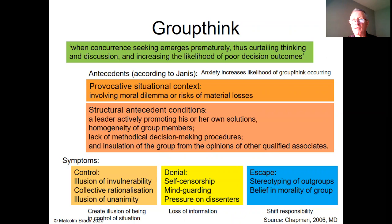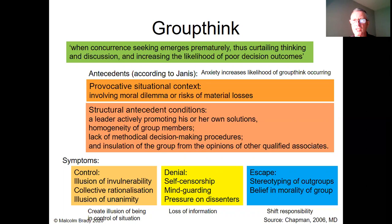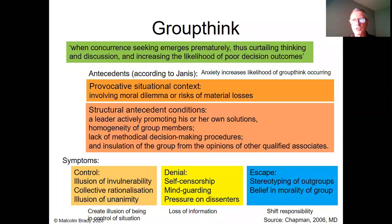Insulation from the opinions of other qualified people is also an antecedent. Symptoms include many of the biases we've discussed: illusion of invulnerability, illusion of control, suppression of dissenters, self-censorship, mind-guarding — a blinkered view — and outside factors like stereotyping of outgroups and belief in the morality of your own group. Chapman's additional contribution is that she suggests anxiety tends to increase the likelihood of groupthink occurring — when there's an anxious or risky situation, that increases the likelihood of groupthink, according to Chapman.